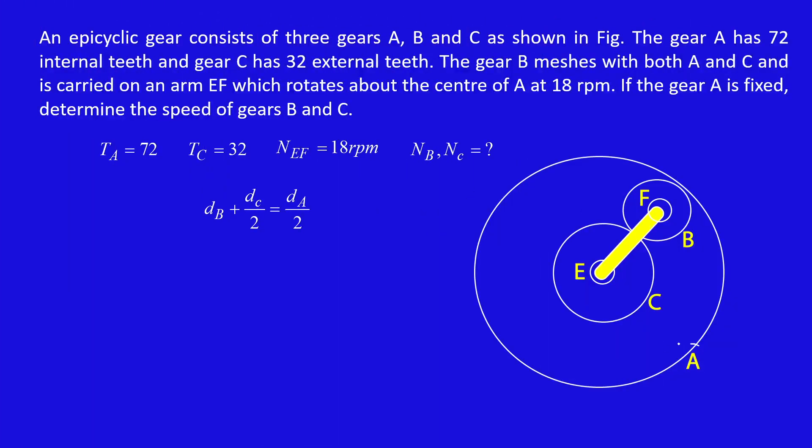There are three gears A, C, and B. Here number of teeth on A and C are known, but number of teeth on B is unknown. So first we need to find number of teeth on B. We can easily find this using this relation.